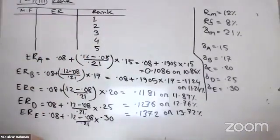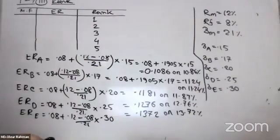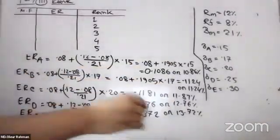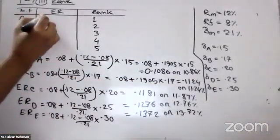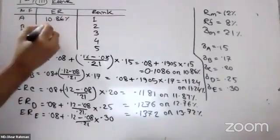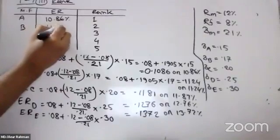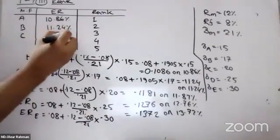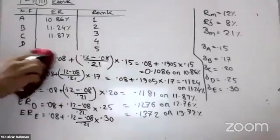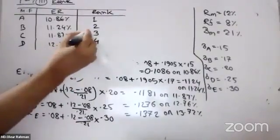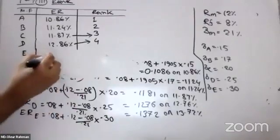1st, 2nd, 3rd. In ascending order, it means that 1st is ranked first, followed by the next in order.